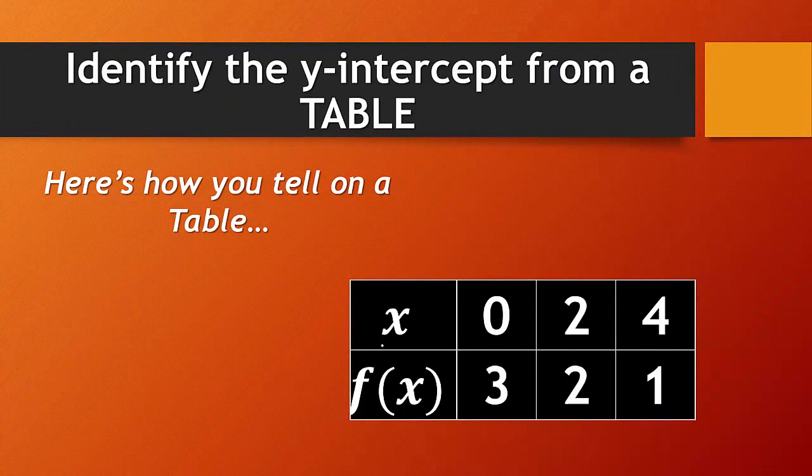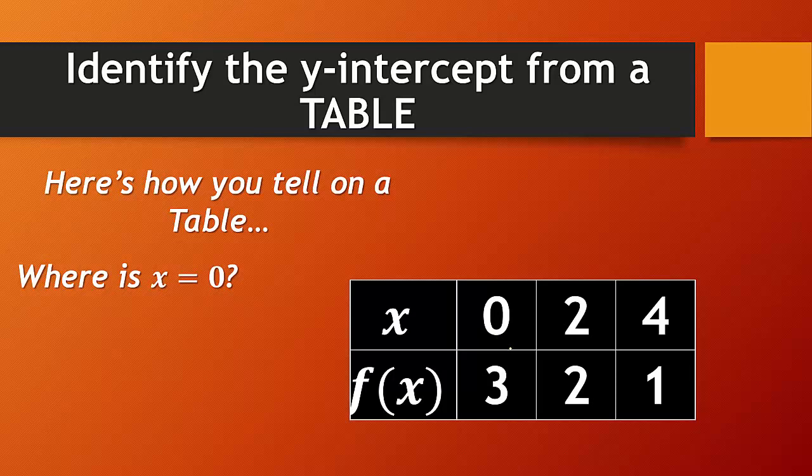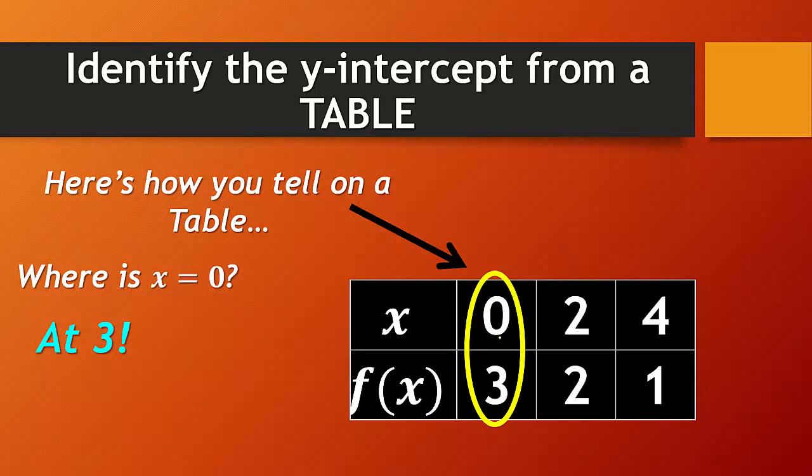So to identify the y-intercept from a table, all you have to do is look where x equals 0. Easy enough. There's x is 0. So your y-intercept would be your f(x) value, so 3. So you find where x is 0, and then you just look for your f(x) or your y value, which is 3. Simple enough.